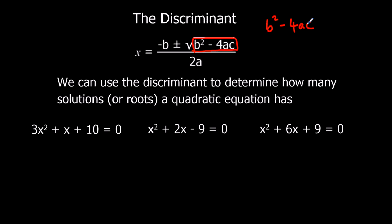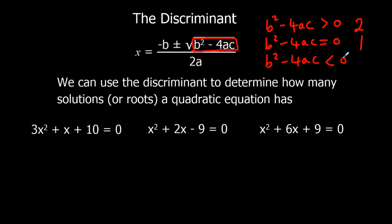We use the discriminant to tell us how many solutions or how many real roots a quadratic equation has. If b squared minus 4ac is bigger than zero, we're going to plus or minus that positive number and get two solutions — two real roots. If b squared minus 4ac equals zero, we'll be plus or minusing zero, so that gives us one solution or one real root. And if b squared minus 4ac is less than zero, the bit inside the square root is negative, and square-rooting a negative gives us no real roots.